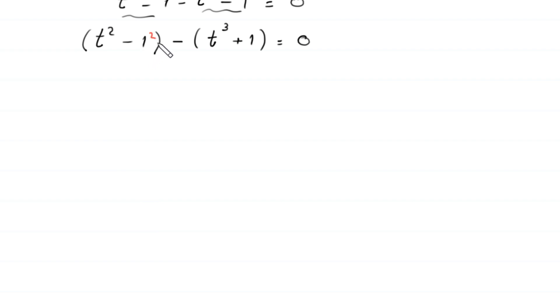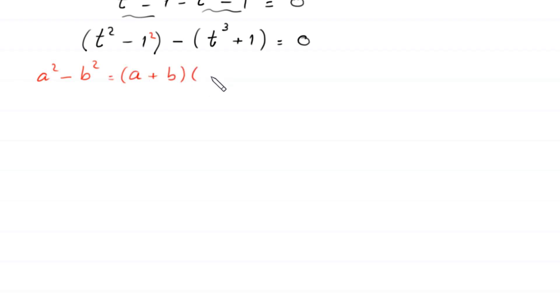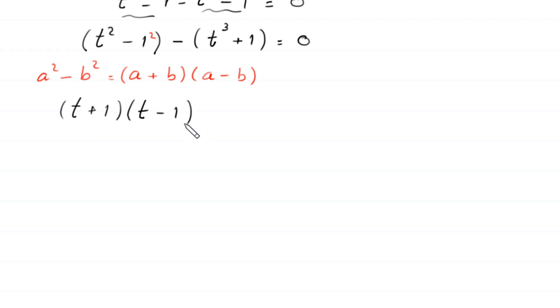The 1 here is the same as 1 squared. By using the algebraic identity a squared minus b squared equals (a plus b)(a minus b), this t squared minus 1 squared becomes (t plus 1)(t minus 1). Then, minus (t cubed minus 1), where 1 is the same as 1 cubed — giving us a sum of two cubes.